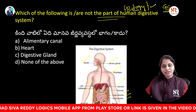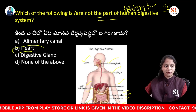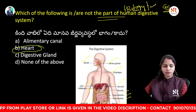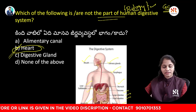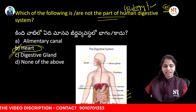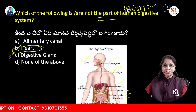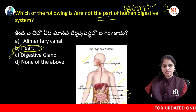So these are the parts of the digestive system, but heart is not included. The alimentary canal and digestive glands are parts of the human digestive system, but not the heart. So option B is your answer related to the human digestive system.